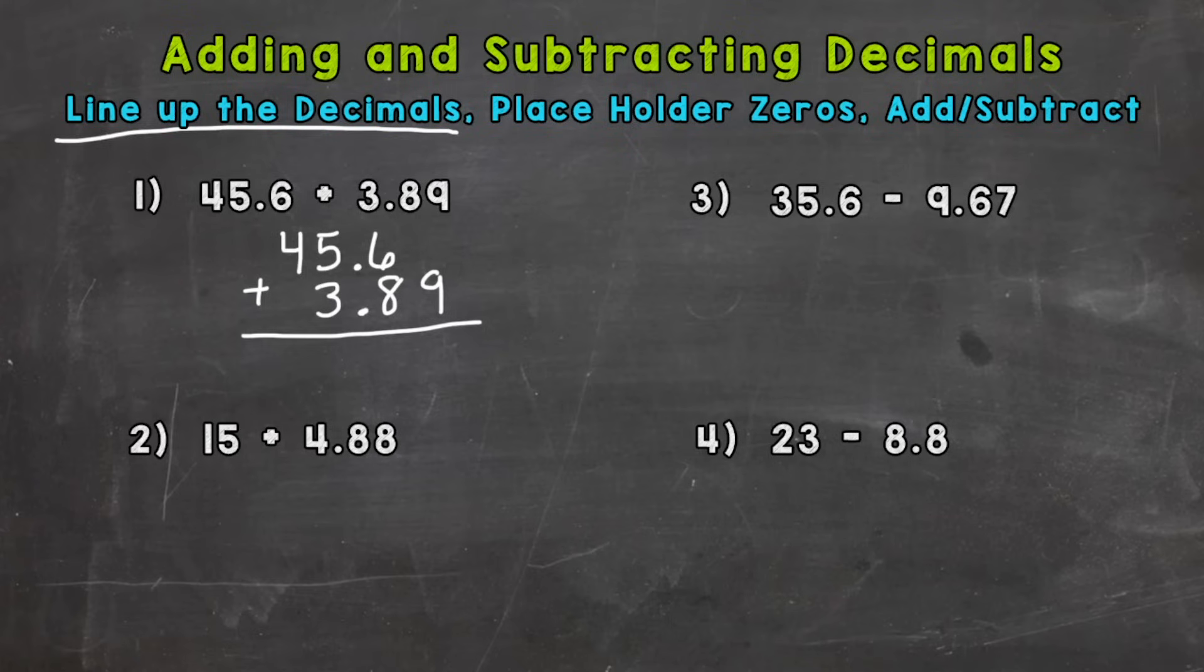Now we can insert placeholder zeros if need be. So take a look at the 9, it's kind of hanging off to the right. The 3 and 89 hundredths goes to the hundredths place, so we want the 45 and 6 tenths to go to the hundredths place too, that way we have something above the 9 there and it lines up a little better. You can add zeros to the right of a decimal and it does not change the value of that number. So again, you can use placeholder zeros to the right of a decimal and it doesn't change the value. This only works for decimals though; you can't add zeros to the right of whole numbers or else it does change the value.